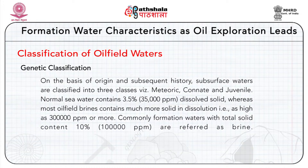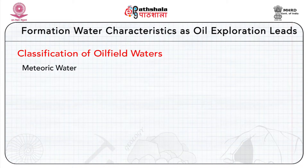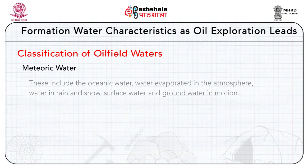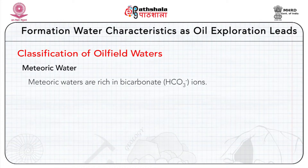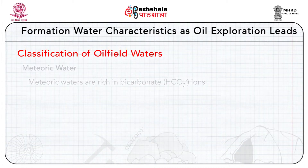Formation waters with total solid content of 10 percent — that is 100,000 ppm — are referred to as brines. Meteoric waters are those which presently form part of the hydrological cycle or remain part of it in the recent past. They include oceanic water, water evaporated in the atmosphere, water in rain and snow, surface water, and groundwater in motion. Chemically, meteoric waters are characterized by low concentration of dissolved solids, usually less than 10,000 mg/L, and are rich in bicarbonate (HCO₃⁻) ions.